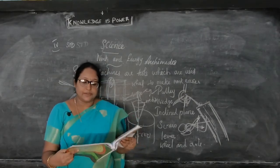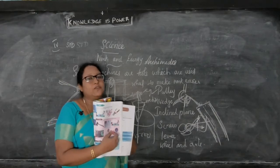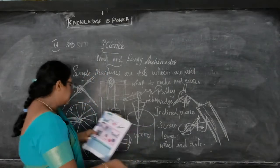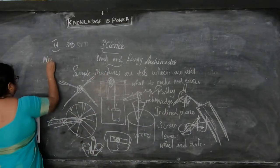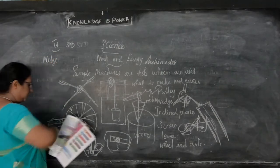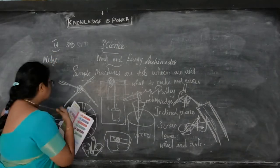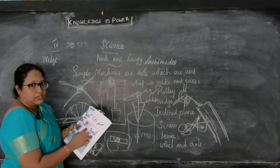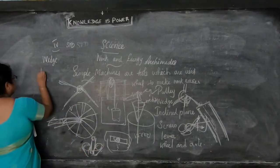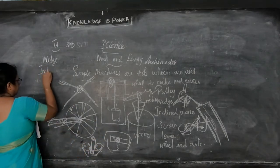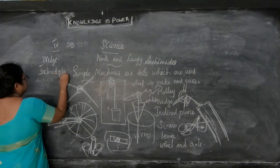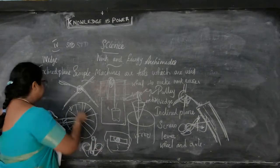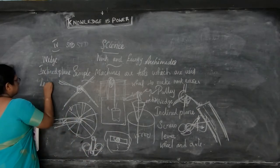Now they have given some pictures. Identify and mention the types of simple machines being used. The first picture shows a hammer — that is a wedge. Next is a ramp — that is an inclined plane, used in hospitals for wheelchairs. The third picture is a seesaw — that is a lever.